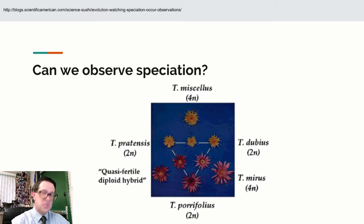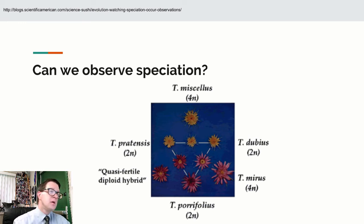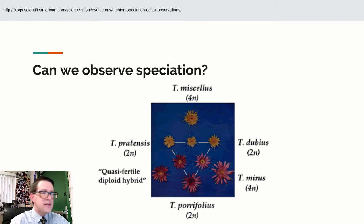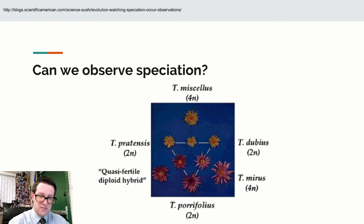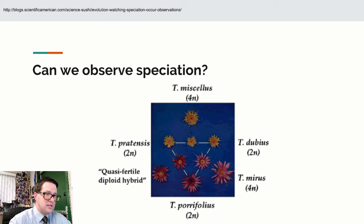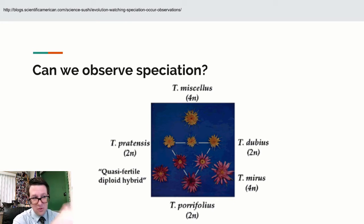We've also seen this with a plant called goat's beard — tragopogon — found in the Midwest. Within real time of us watching it, a sympatric speciation event occurred where it changed its genetics, resulting in two different species.